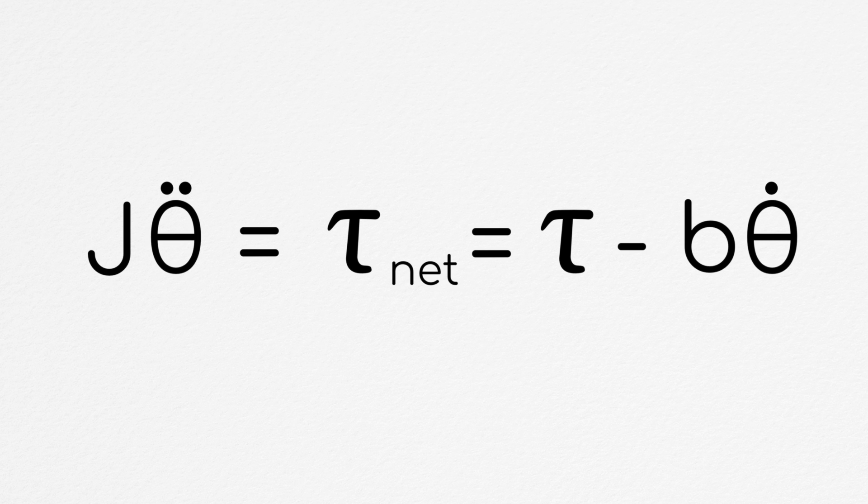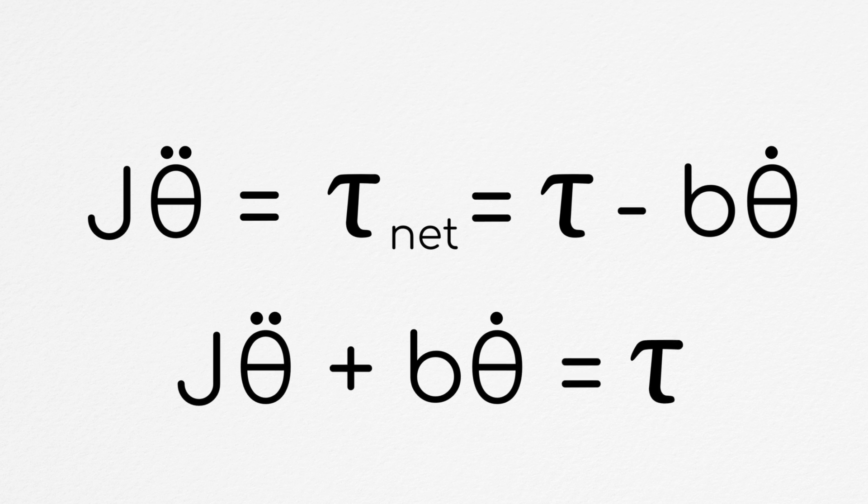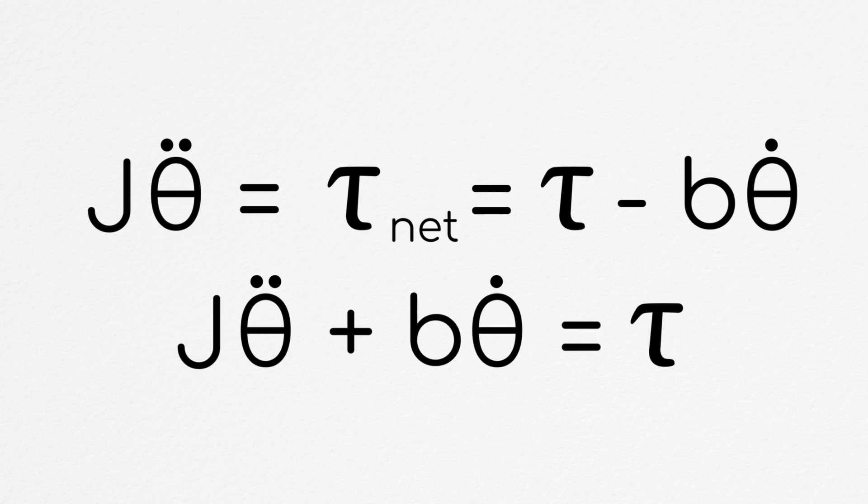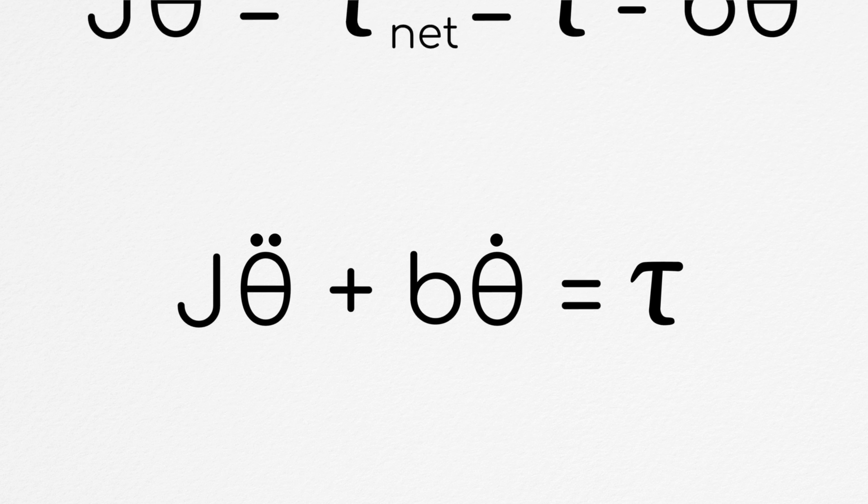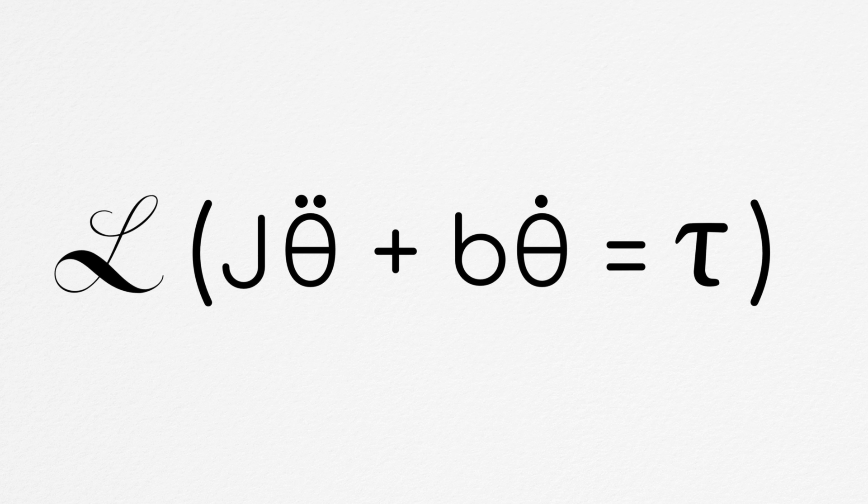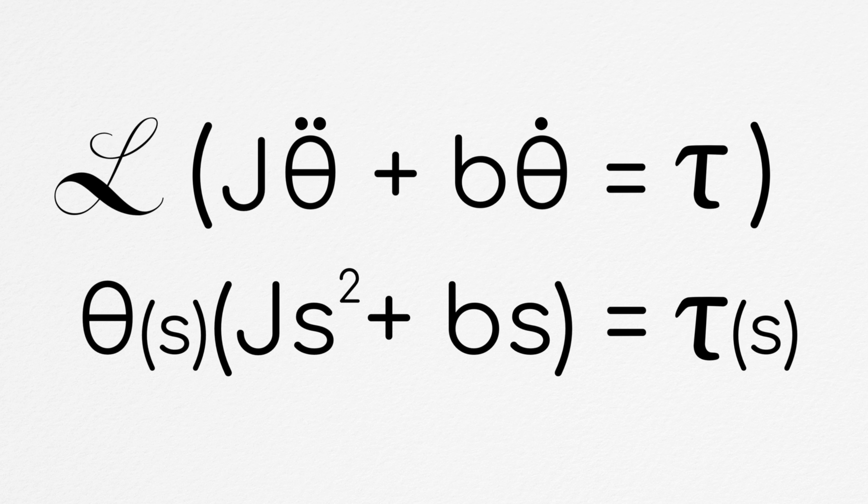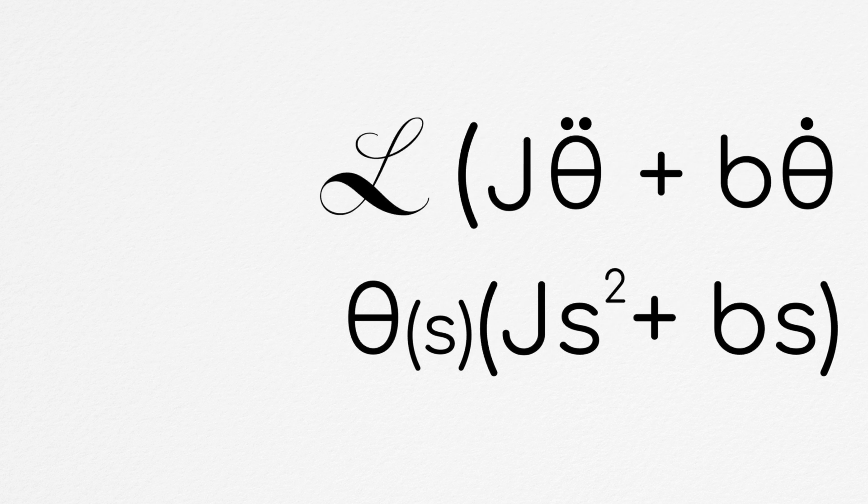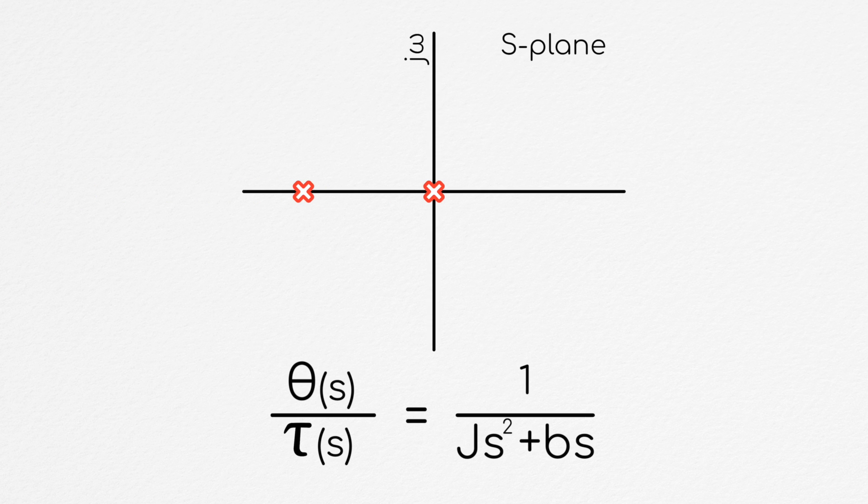By moving our damping to the left side of the equation, we can group terms such that one side is only a function of the derivatives of rotational position and the other is just our input torque. Now, to further analyze this system, we'll move it into the Laplace domain through the Laplace transform. Assuming no initial conditions and moving some terms around, we can get our transfer function from torque to position as having two real poles, one at the origin and one at negative b over j.